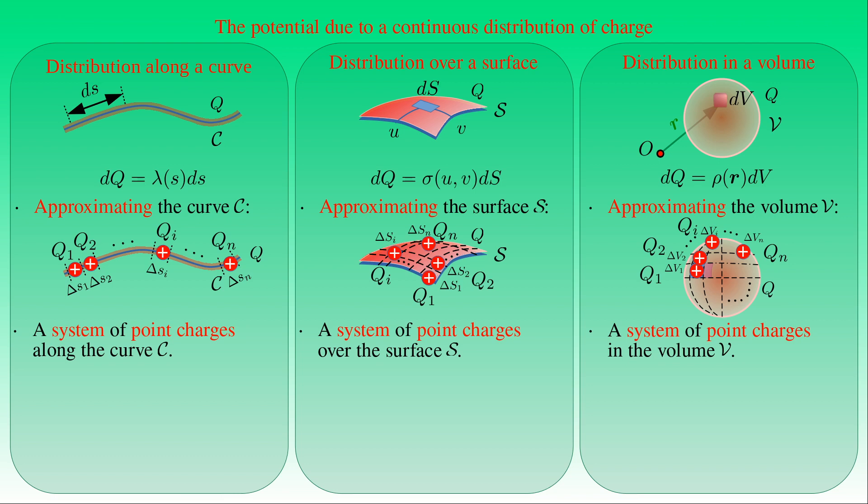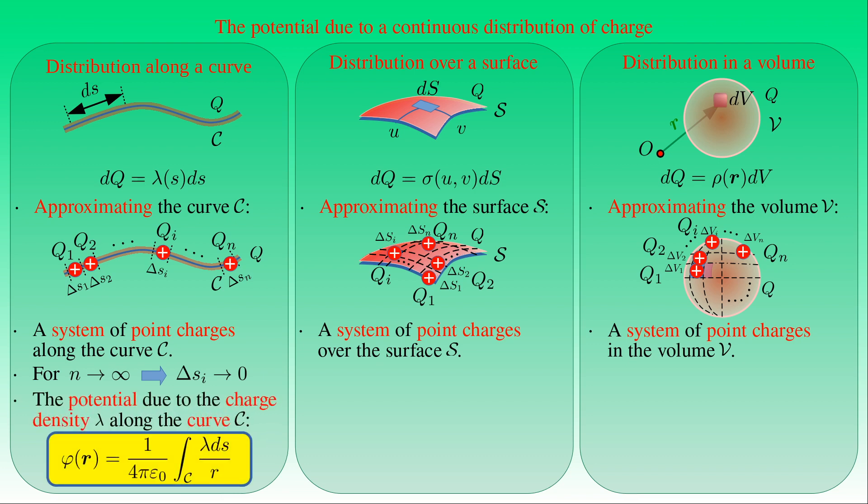In all three cases, the electric potential at a given point is the sum of potentials due to the individual point charges. As we refine the approximation of curve C so that segment lengths tend to zero and N→∞, point charges qi become infinitesimal charges dq = λ·ds, and the sum of potentials becomes a line integral: φ(r) = (1/4πε₀) ∫_C λ/r ds, where r is the distance from the line element to the field point.